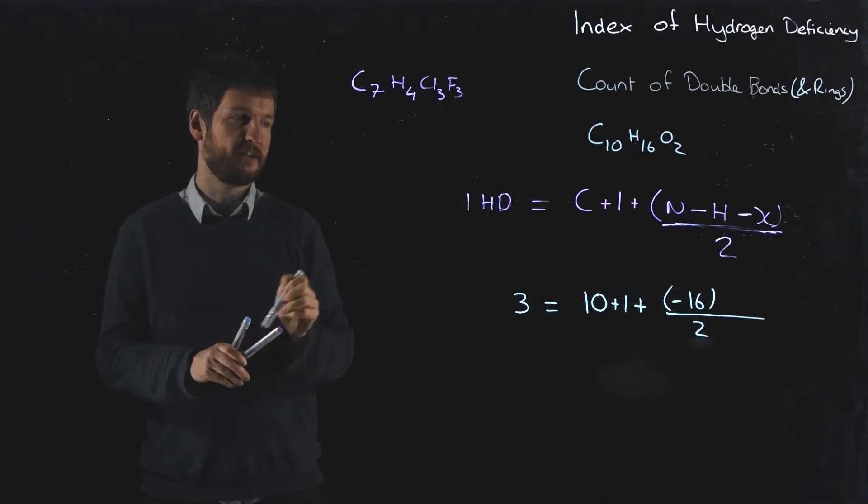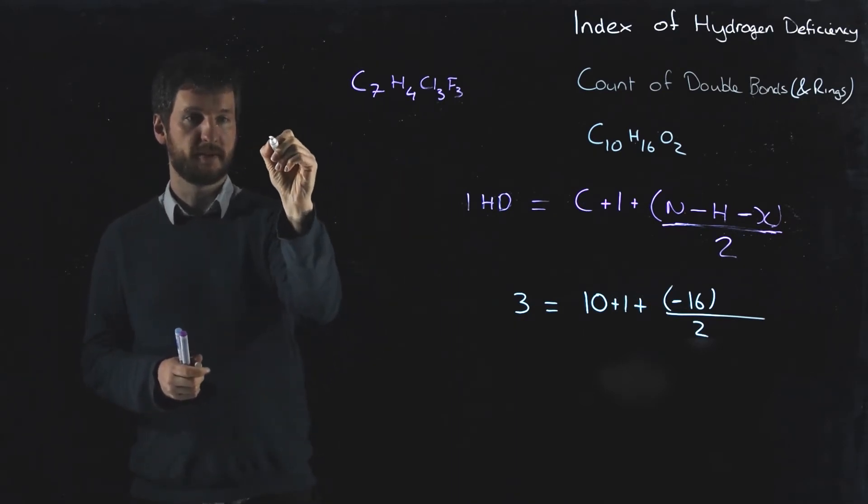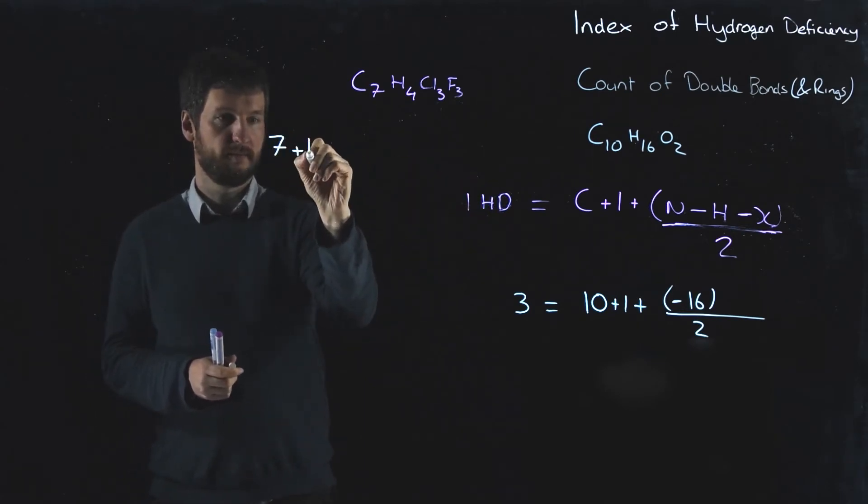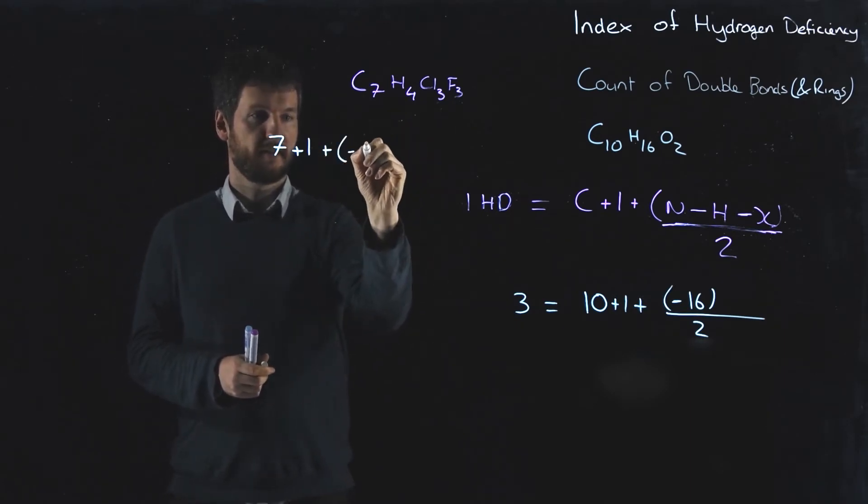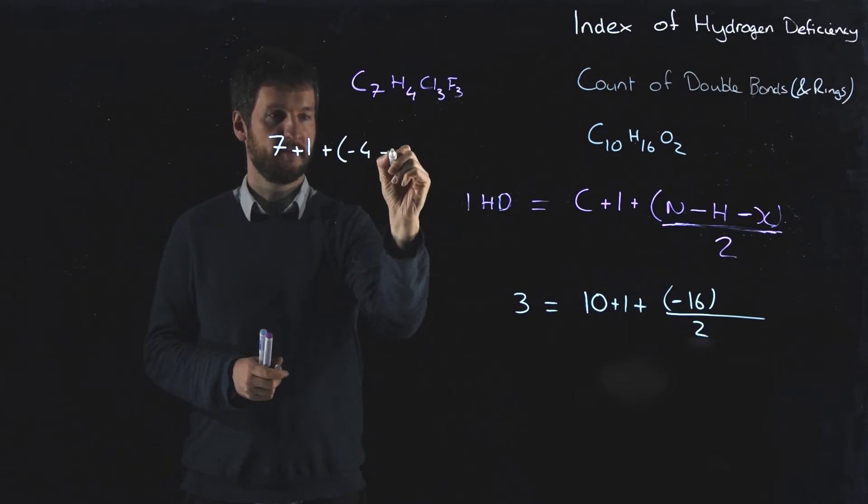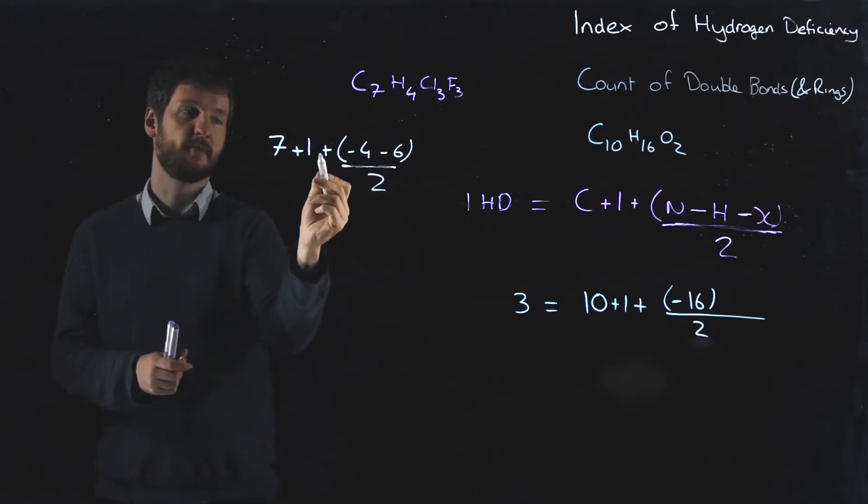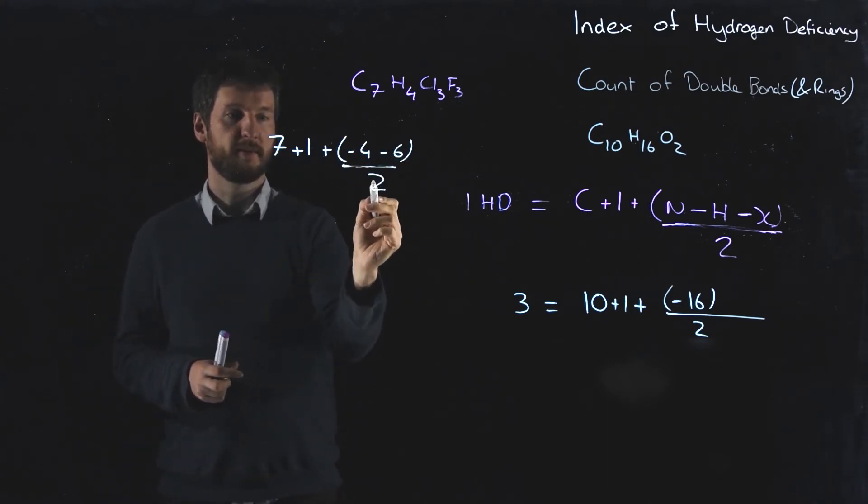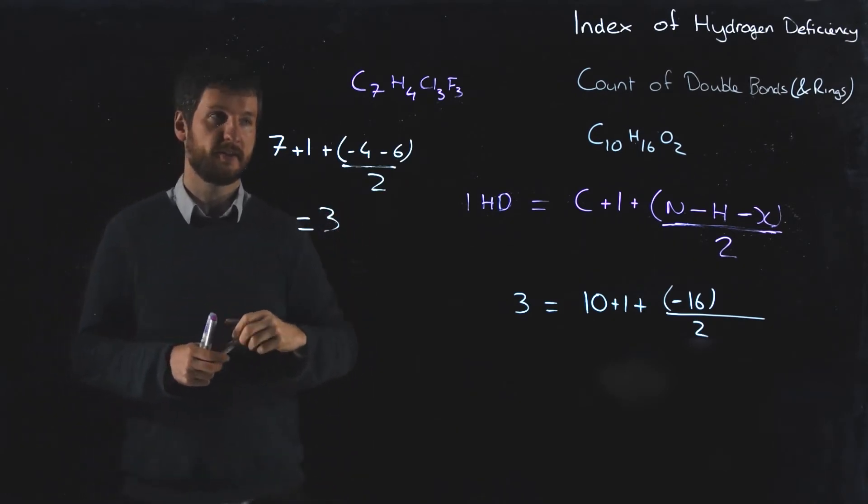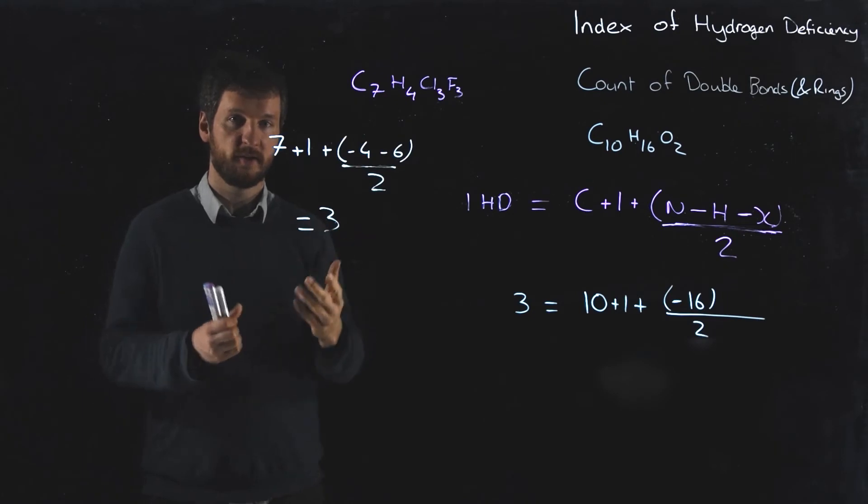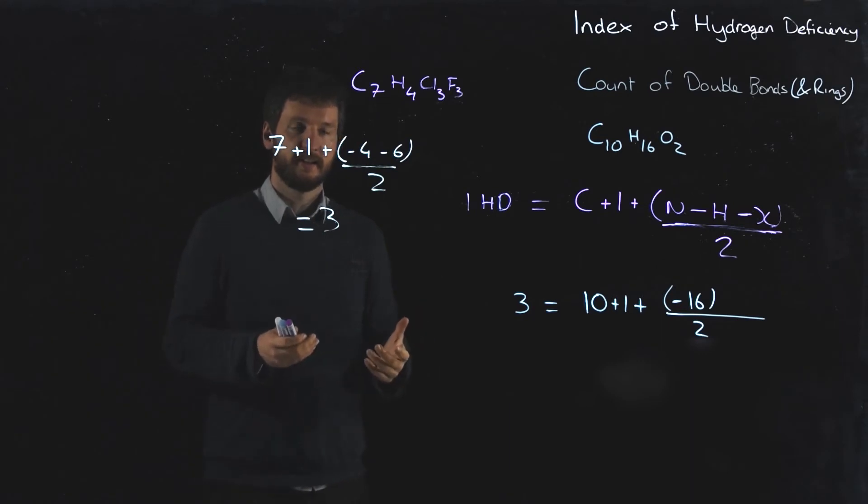Let's think about our same formula. The index of hydrogen deficiency is going to be the number of carbons, which is seven, plus one, plus in brackets minus four, and then there are six halogens in total, minus six, all divided by two. If we work that out, seven plus one is eight, minus that'll be minus 10 divided by two, so minus five. So that's also going to have an index of hydrogen deficiency of three. In other words, there are also three double bonds or cyclic structures or some combination of both within that molecule.